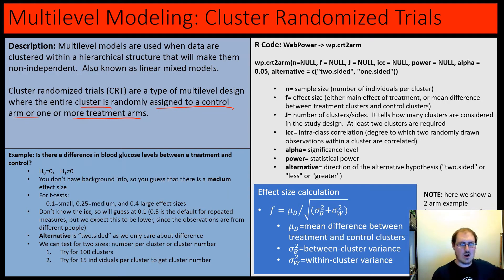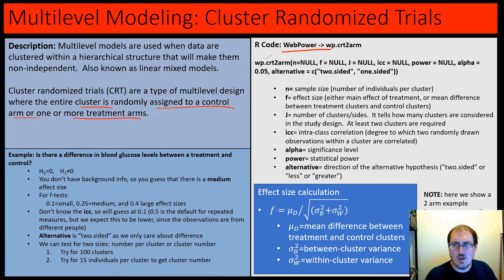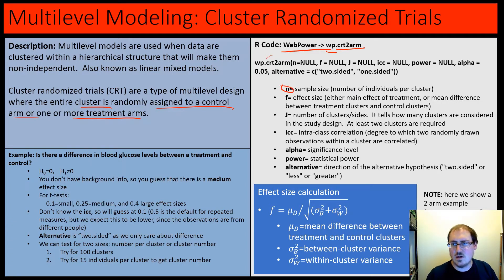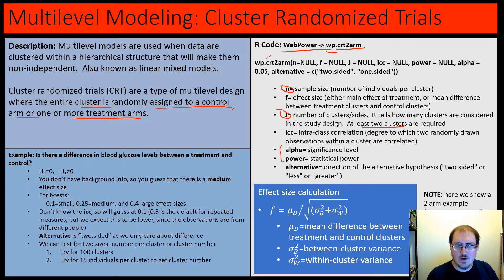There's a lot going on here with WebPower for cluster randomized trials — a two-arm CRT. There's sample size, the number of individuals per cluster. We'll deal with clusters now, which is J, the number of clusters or sites. You need at least two clusters. We have the standard alpha and power and, of course, effect size.